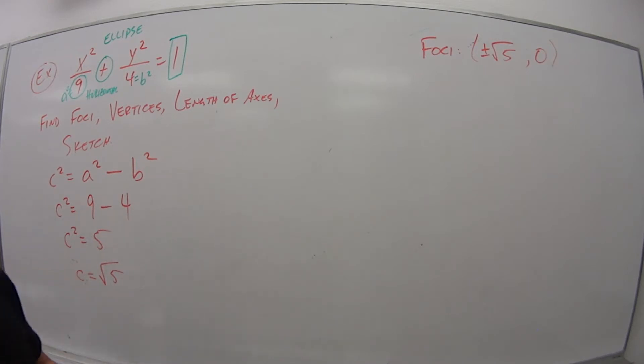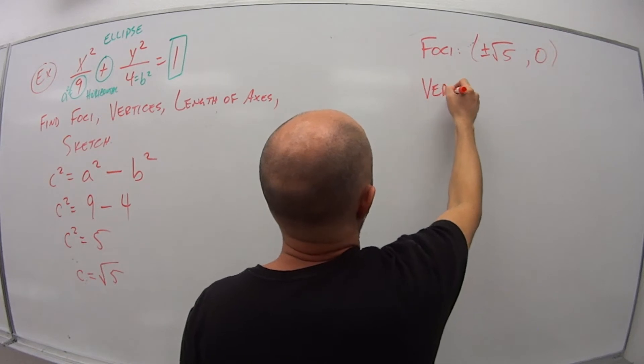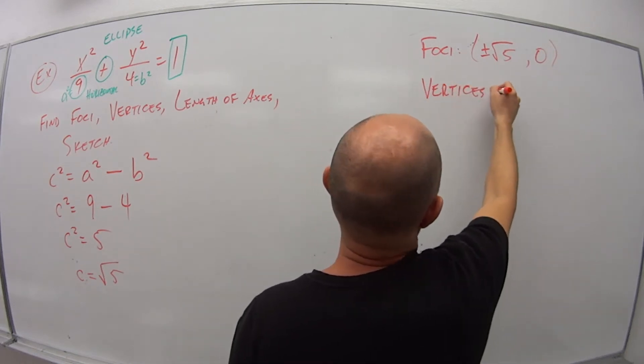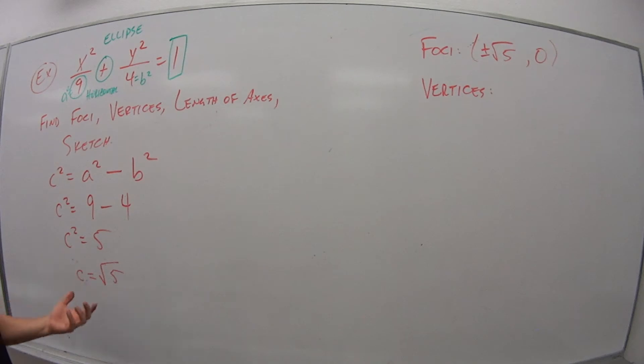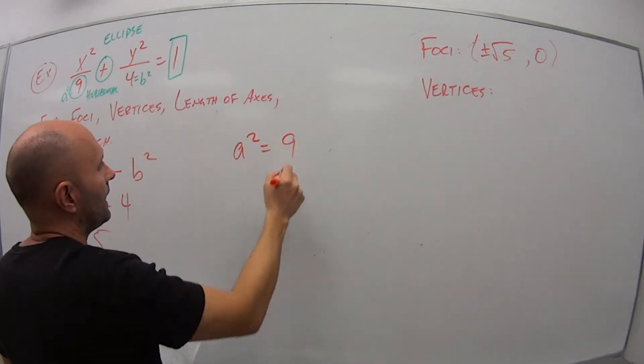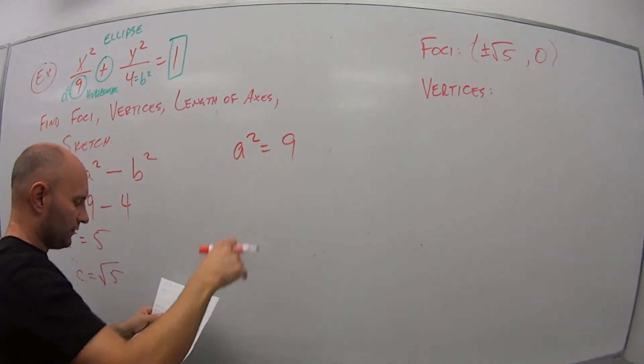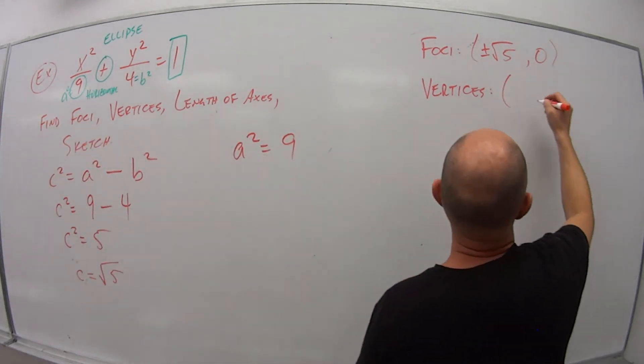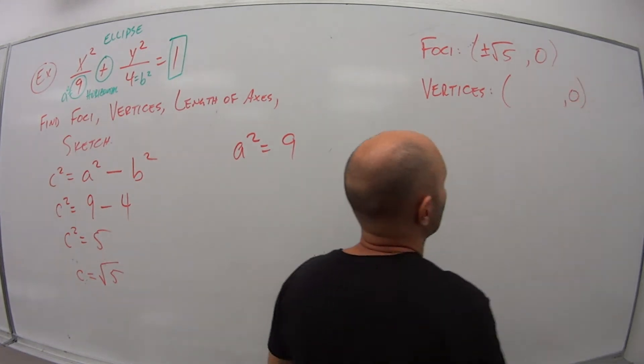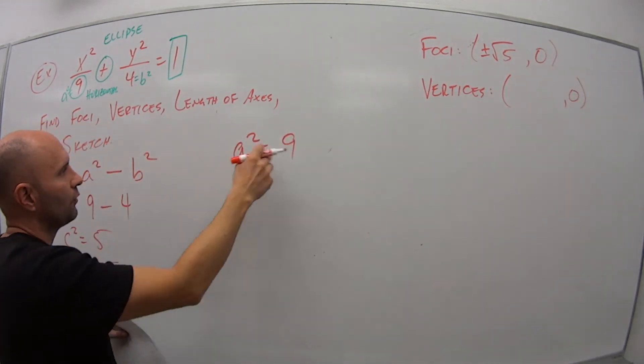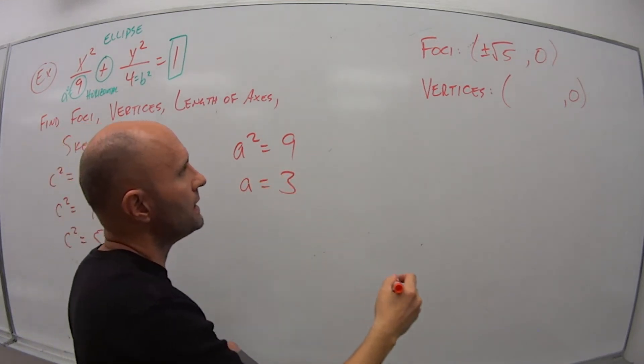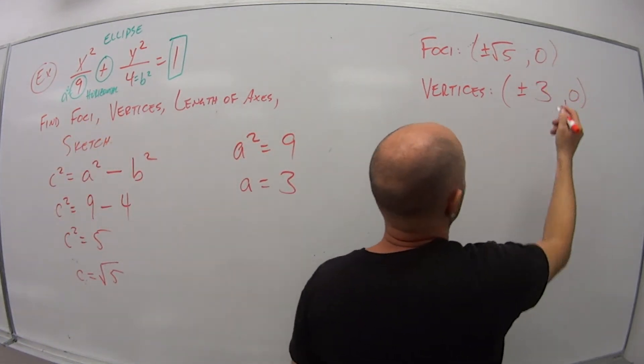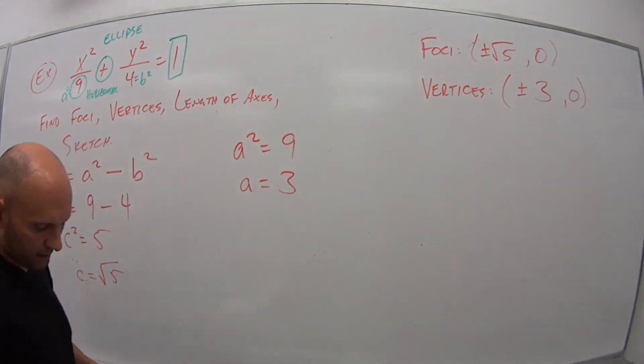So now the vertices. In this case, we're just talking about the major vertices, so our a values. I have a squared is equal to 9. So my vertices are plus or minus a and 0, because it's a horizontal ellipse. If a squared is 9, that means a is equal to 3. So my vertices occur at plus or minus 3 and 0.